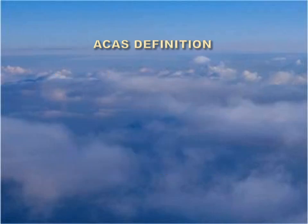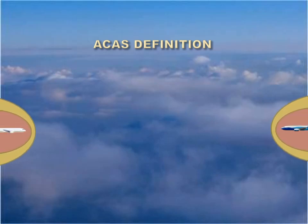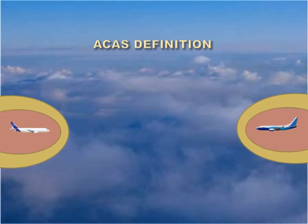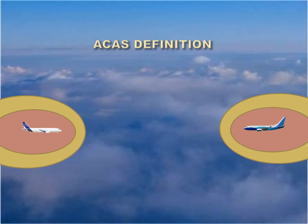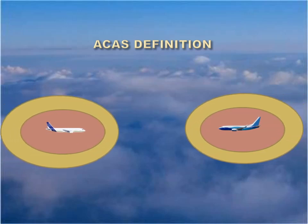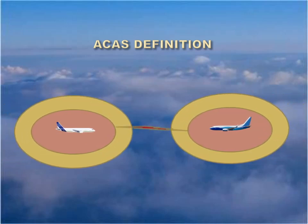Airborne Collision Avoidance System — Definition. Over the years, air traffic has continued to increase. The developments of modern air traffic control systems have made it possible to cope with this increase whilst maintaining the necessary levels of flight safety. However, the risk of airborne collision remains.